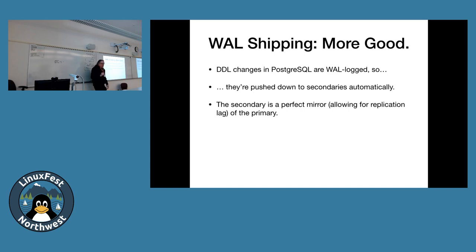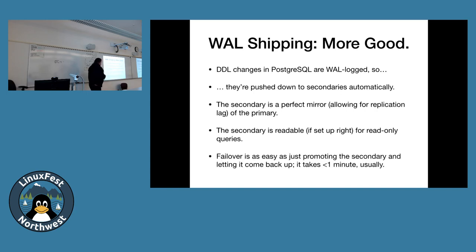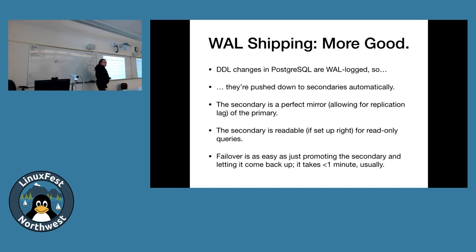Since DDL changes are in the WAL, they're pushed to secondaries automatically and replayed just like any other change. You don't have to do anything special to distribute schema changes — they just happen. The secondary is a perfect mirror of the primary, allowing for replication lag. If set up correctly, you can read from it (though not write). You can use it for load balancing, query distribution, or running pg_dump from it instead of the primary. Failover is easy — promoting a secondary usually takes less than a minute.